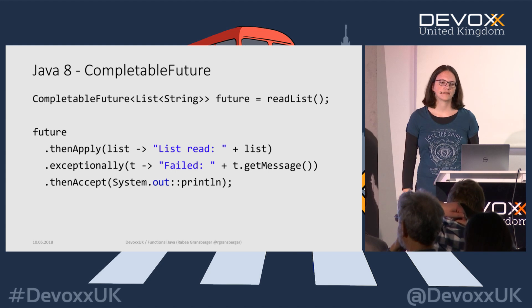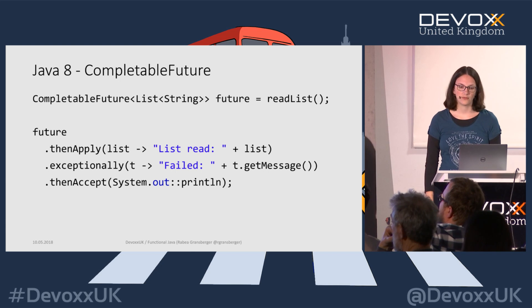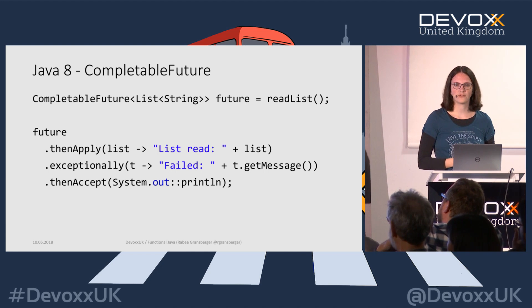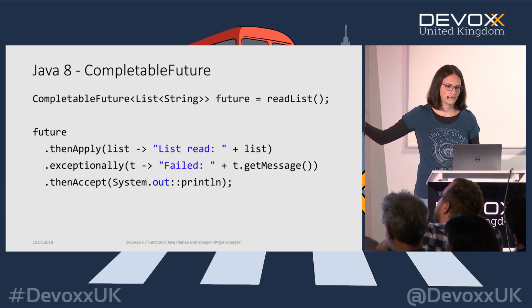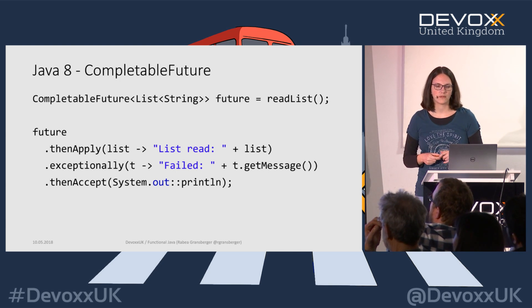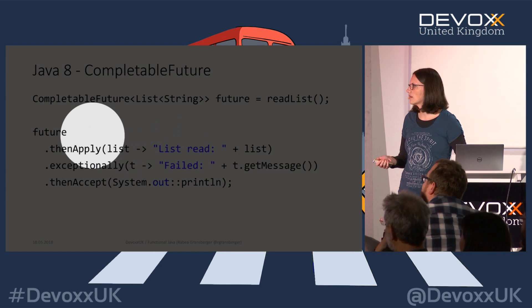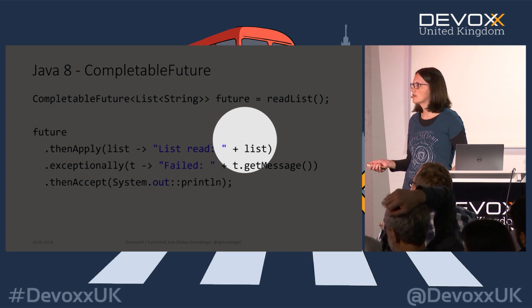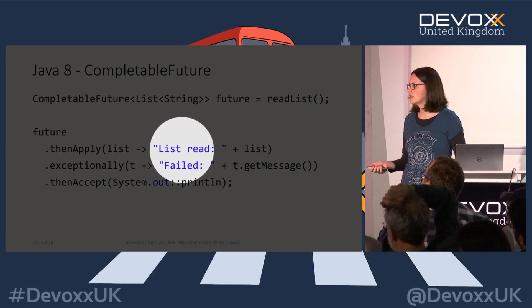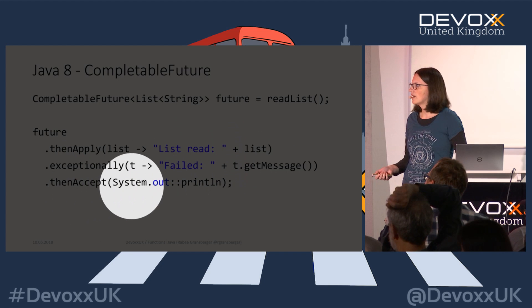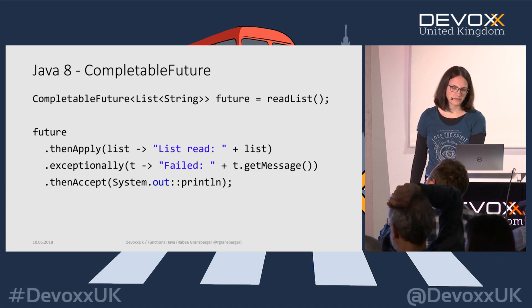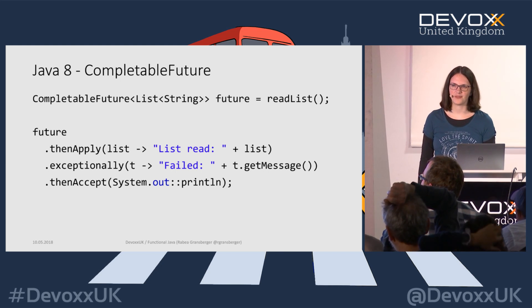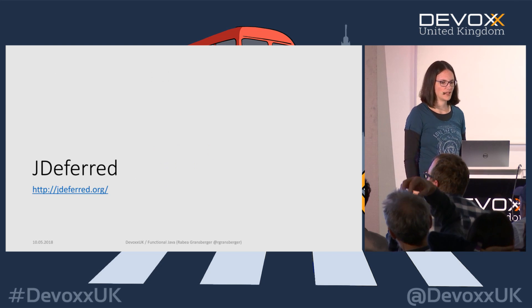We've had reactive support in Java since Java 8 with `CompletableFuture`. In this example I'm reading in a file asynchronously using `readList()` which returns a `CompletableFuture`. I set it up with `thenApply` — when it's finished successfully, I print the result. If there's an exception, I print 'failed reading in' and the exception message. In the final step I print all the values. This kind of works, but for me the method names on `CompletableFuture` are really confusing and hard to keep in mind.